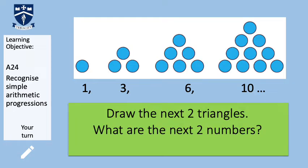Have a look at the four patterns on the screen. I have four triangles. It goes 1, 3 dots, 6 dots, 10 dots. Based on how they have formed these first four patterns, draw the next two patterns and write down the next two numbers under the next two patterns. Once you have done that, come back to the video.